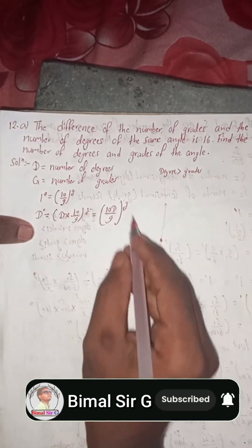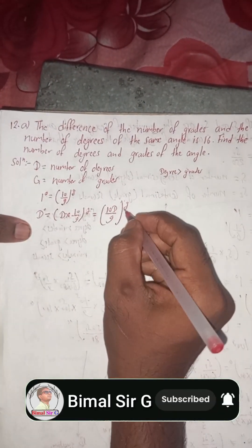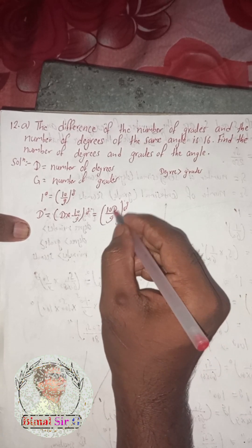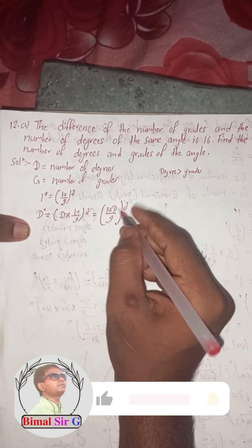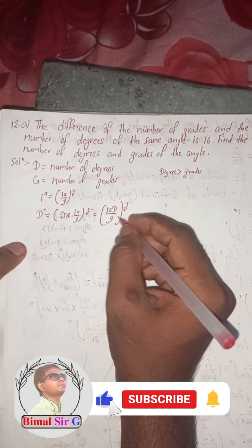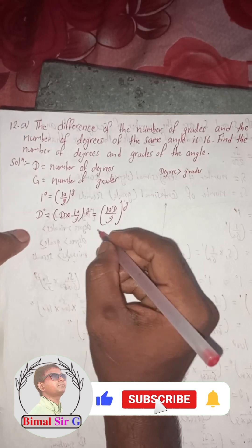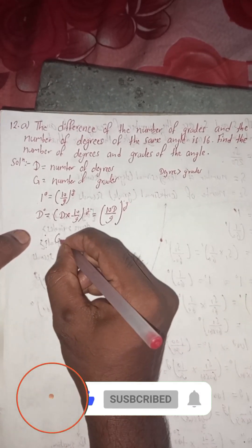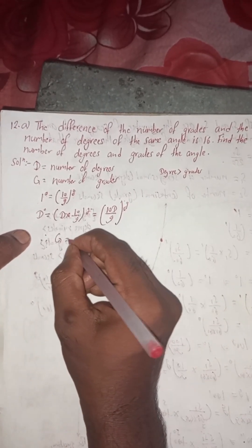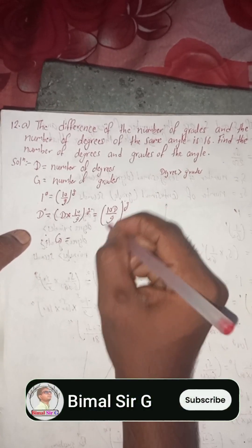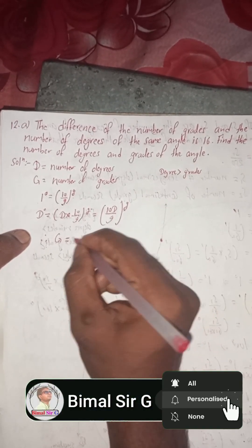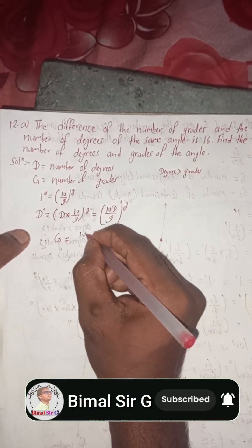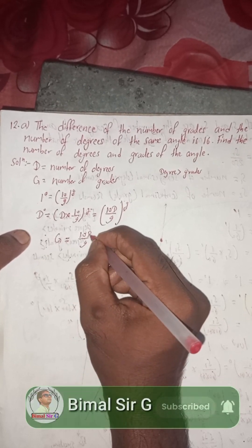Now we can write: therefore G is equal to 10D by 9. This is our number of grades.